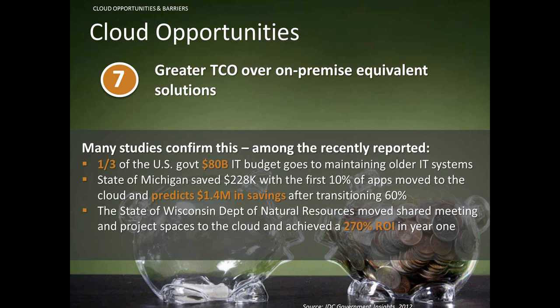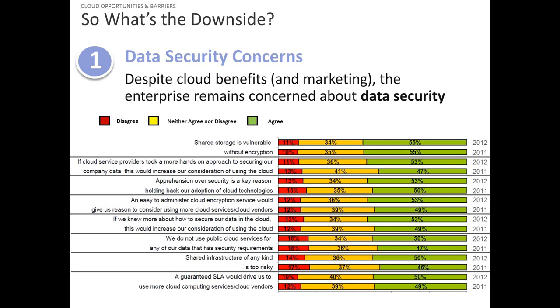The next slides cover some of the barriers to cloud adoption as we've talked with enterprise and public sector customers. Many enterprises are still pursuing on-premise routes — market data from Gartner supports that. The number one concern that comes up time and again when asked about the cloud is indeed security, and specifically data security. A Ponemon report surveyed enterprise execs in 2011 and 2012 about their concerns around cloud and security. Notably, concerns have not decreased — if anything, they've increased year on year.